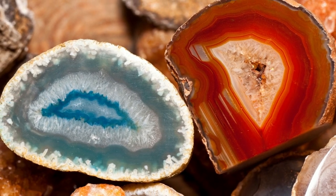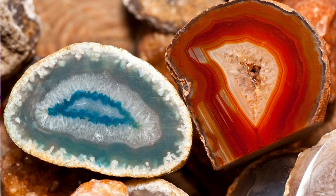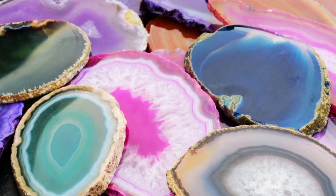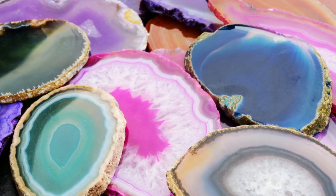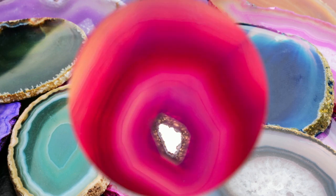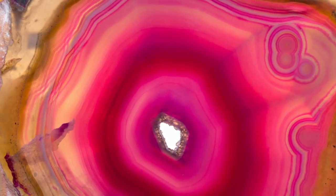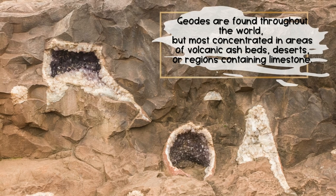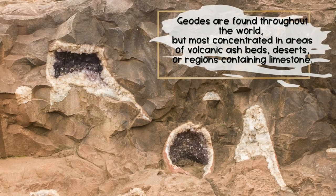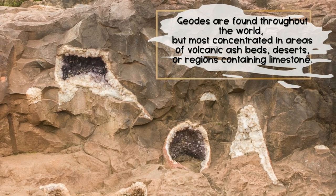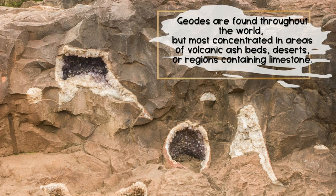Now let's take a look at these beautiful agate slices. These are small geodes that are often sliced and polished, showing off their beautiful remarkable colors and crystals inside. Geodes are found throughout the world but most concentrated in areas of volcanic ash beds, deserts, or regions containing limestone.